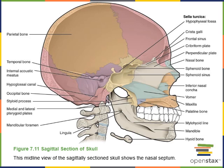Here we see a mid-sagittal view of the skull. The palatine bones and the palatine process of the maxilla can be seen with this view. The palatine bone forms the posterior one-third of the hard palate, and the palatine process of the maxilla forms the anterior two-thirds of the hard palate.